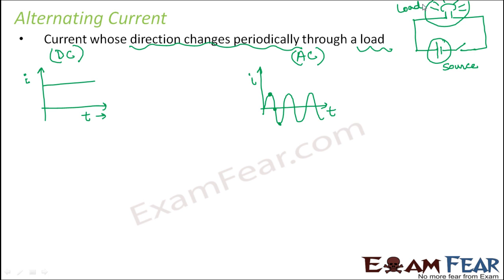How do we mathematically express alternating current? The patterns of alternating current and alternating voltage are similar. At every instant of time the value of current is different — that is the beauty of alternating current. If you look at the graph, it is very similar to a sine curve. So we can say that I = I₀ sin(ωt), where I₀ is the peak value of current — the maximum value you see on the graph.